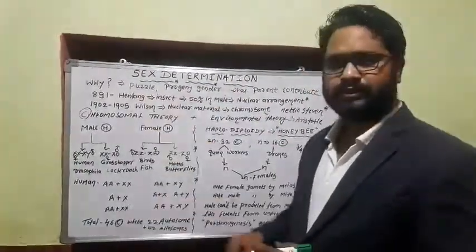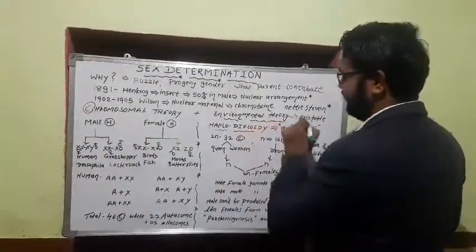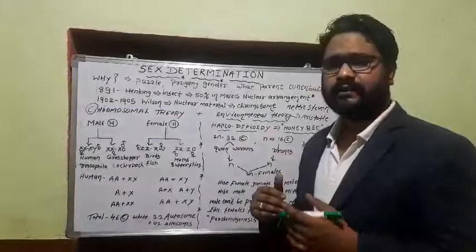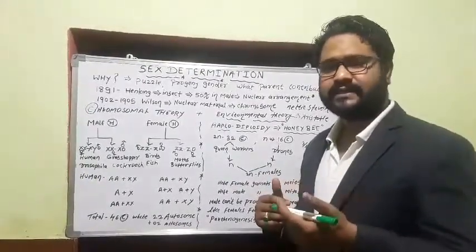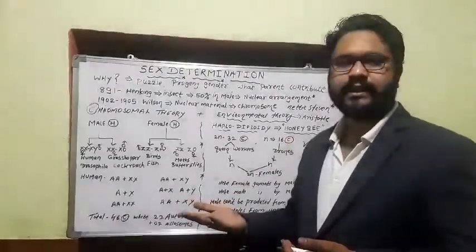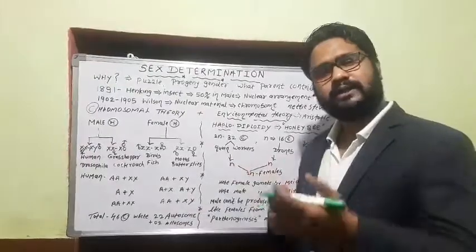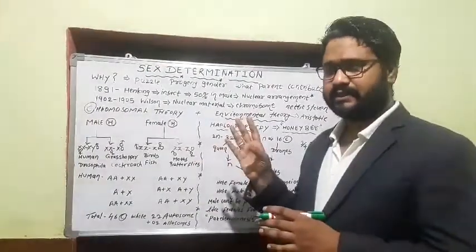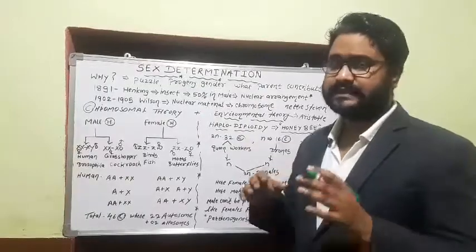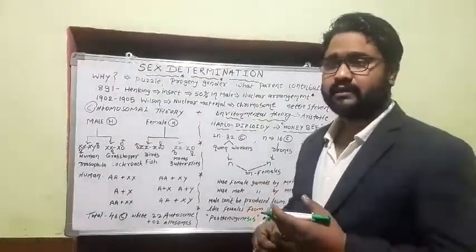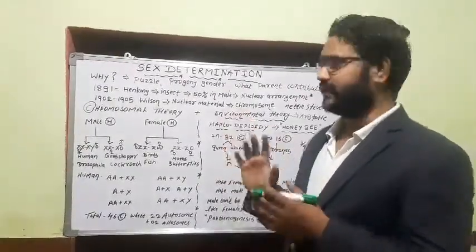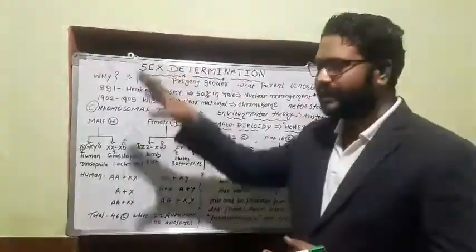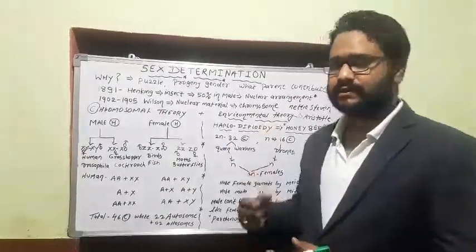Before going into chromosomal theory, let us look at the environmental theory, proposed by the great naturalist and biologist Aristotle. He said that when male heat power dominates female heat during sexual intercourse, the next progeny will be male; when female cold overcompensates male heat, the next progeny will be female. This hypothesis is somewhat acceptable in certain reptiles like crocodiles, where egg hatching temperature decides gender, but that is not our primary concern per NCERT.